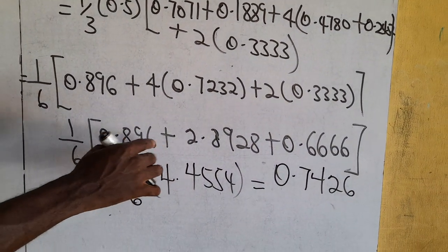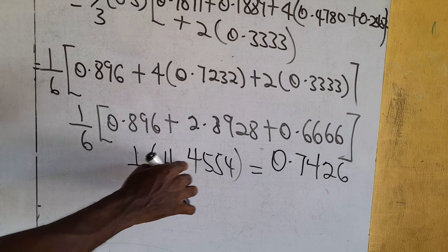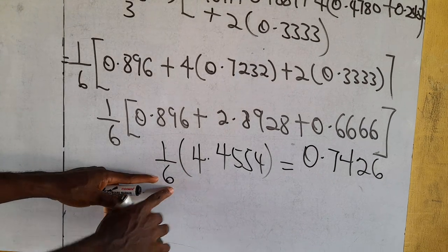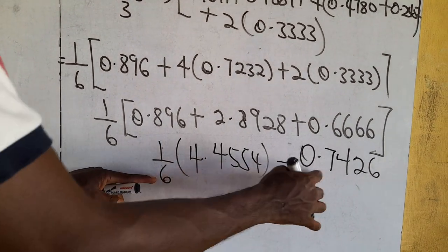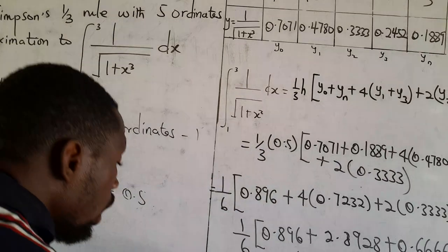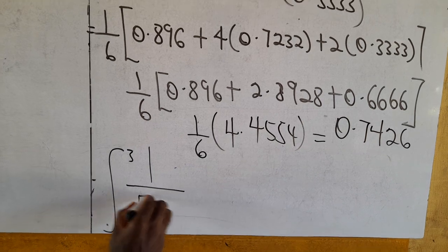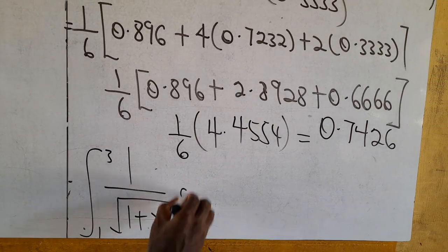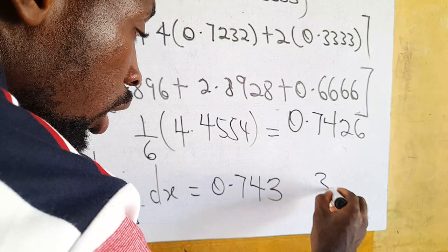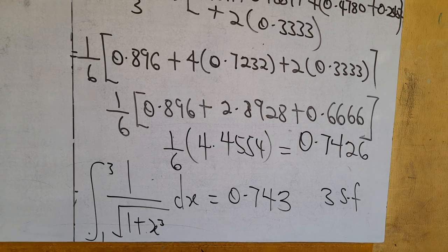So 4 times 0.7232 gives 2.8928, and 2 times 0.3333 gives 0.6666. Adding 0.8960 plus 2.8928 plus 0.6666 gives 4.4554. Then (1/3) × 0.5 = 1/6, and (1/6) × 4.4554 gives 0.7426. Correct to 3 significant figures, the integral from 1 to 3 of 1/√(1+x³) dx equals 0.743.